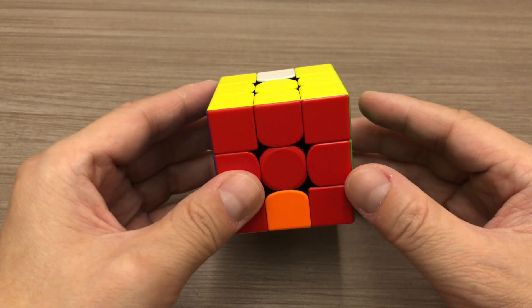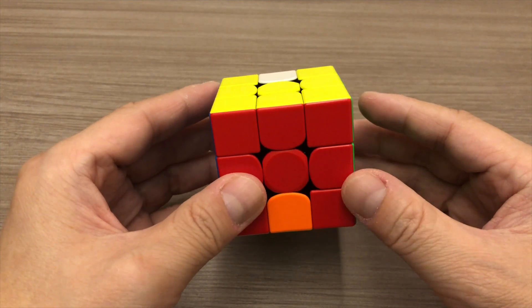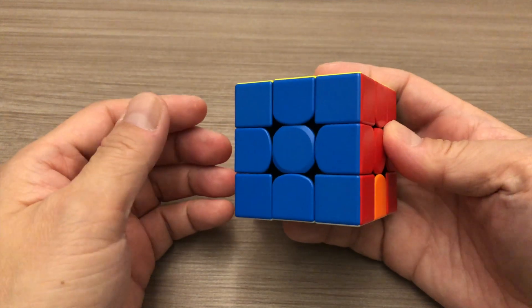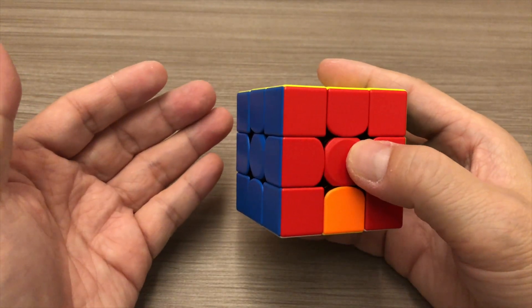Before we start to solve the remaining edges of the m-slice layer of the cube, here are some basics to know for this tutorial. First of all, hold the cube with the blue or green block facing towards your left palm at all time like so.